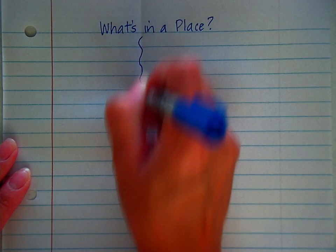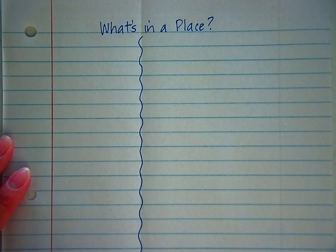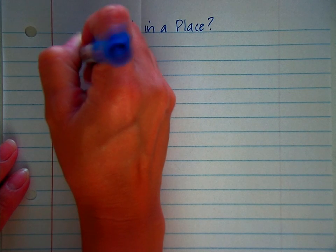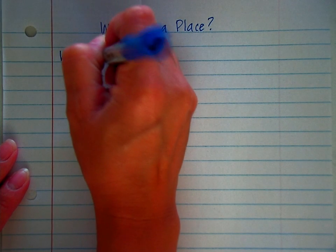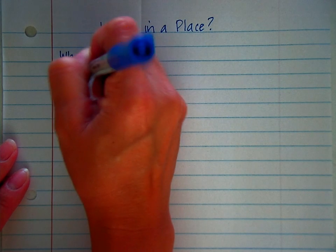Go ahead and take your pencil and draw a line right down the fold that you made. I'm drawing a squiggly line because I can't draw straight. On the left hand side of your paper, let's go ahead and write our focus question. What defines a place?